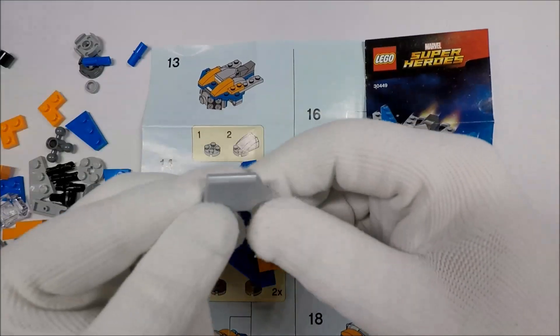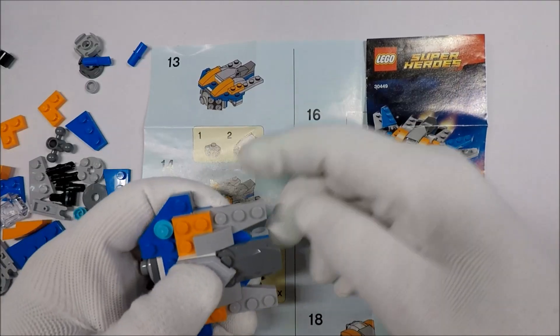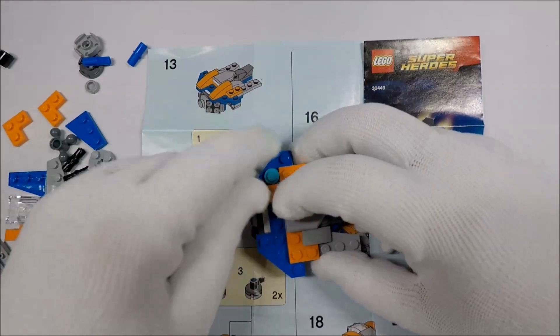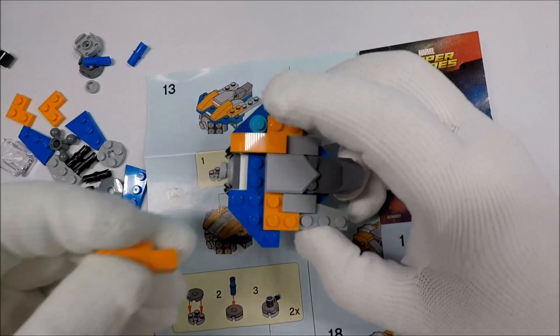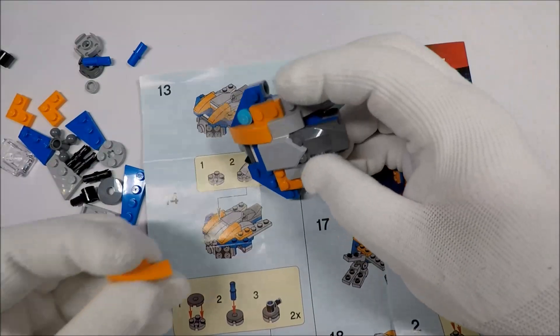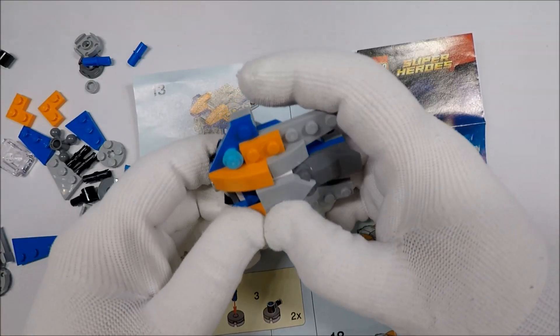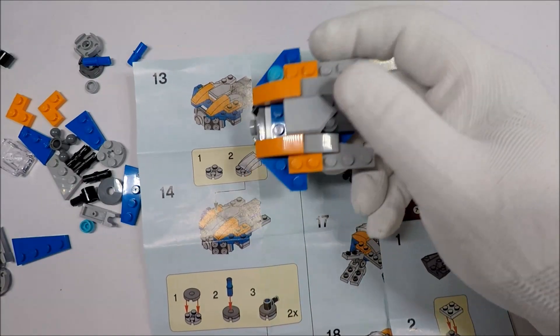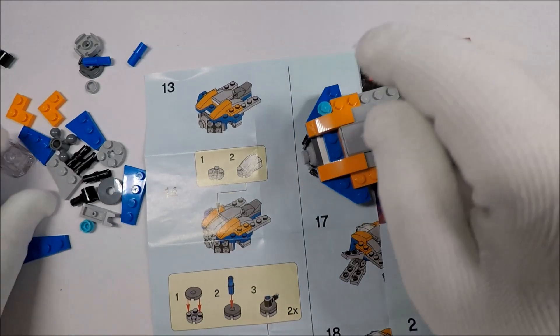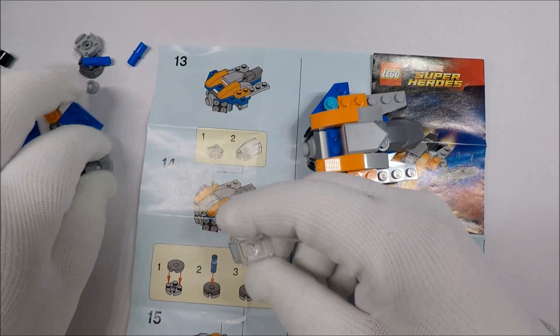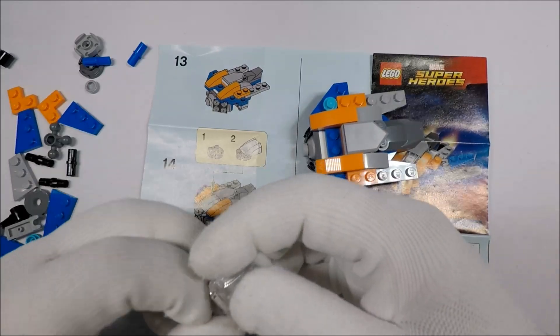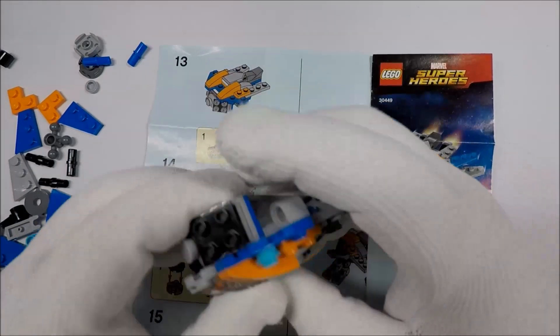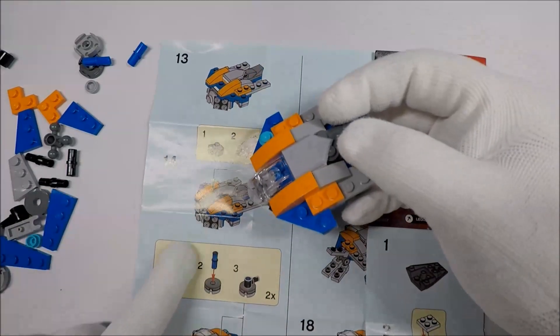So we have this first base looking thing clips in right there. And this goes here. And this goes here. Like so. And then we got to do that part. I do like this canopy looking thing. So this sits right there like that.